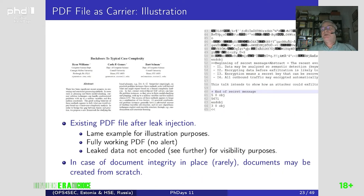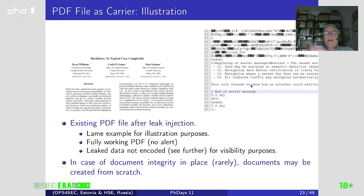Here is a simple case. I have taken a PDF file — an academic paper from the internet — and hidden a secret message, here in plain text. You can open the PDF and there is no alert. I have left the data in plain text for visibility purposes, but we can of course apply what is coming next. If you suppose there is document integrity checking in place, you can create those documents from scratch, which means you will bypass the integrity checking.